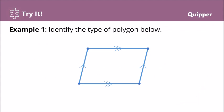Let's try this. Example number one: identify the type of polygon below. It is a quadrilateral because it has four sides. And also, it's a parallelogram because it has two pairs of opposite sides that are parallel to each other. So it is a quadrilateral, and specifically, it's a parallelogram.